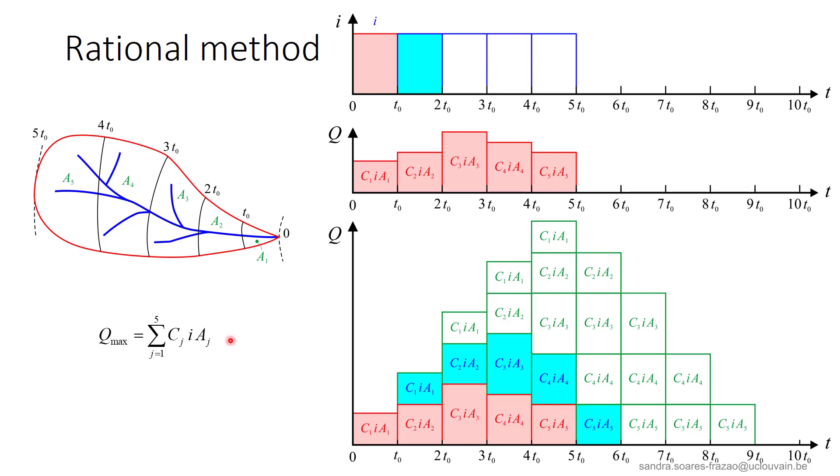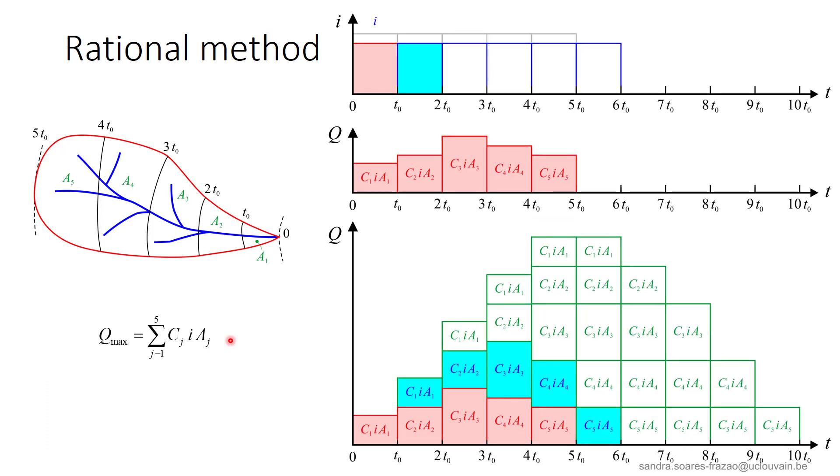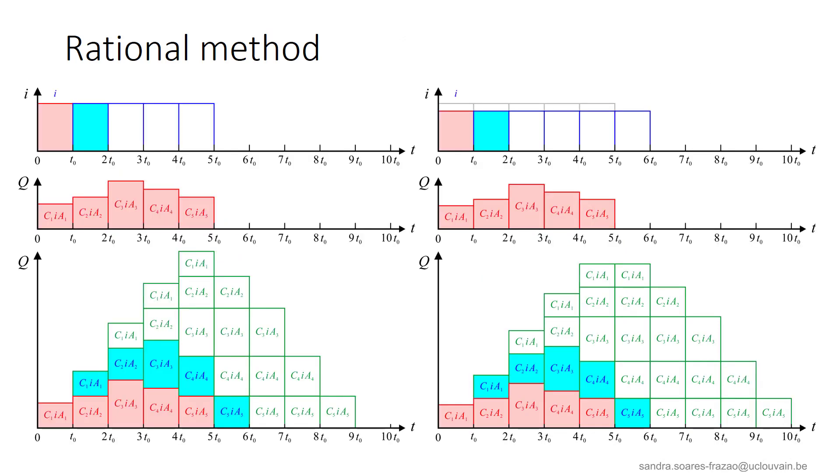But now, what happens if the rain lasts longer than 5 T0, the time of concentration of the entire catchment? Well, in this case, as we have seen with the intensity duration frequency curves, as the rain duration is more important, the rain intensity is lower. Constructing the resulting hydrograph as previously, we see that the maximum discharge is now spread over 2 time steps, and it is lower than the value obtained previously. The direct comparison of the two situations confirms the reduction in the maximum discharge.